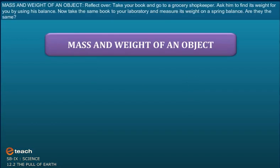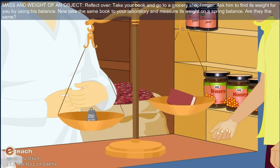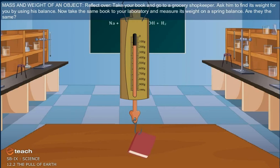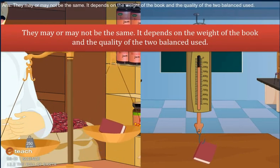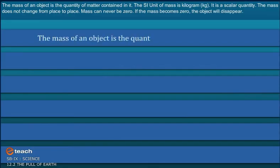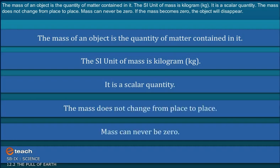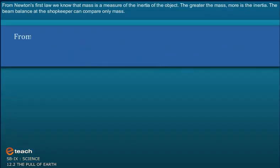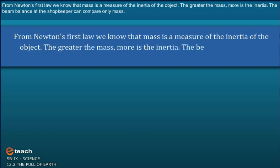Mass and Weight of an Object. Activity: Take your book and go to a grocery shopkeeper. Ask him to find its weight using his balance. Now take the same book to your laboratory and measure its weight on a spring balance. The mass of an object is the quantity of matter contained in it. The SI unit of mass is kilogram (kg). It is a scalar quantity. Mass does not change from place to place and can never be zero. From Newton's first law, mass is a measure of the inertia of the object — the greater the mass, the more the inertia. A beam balance at the shopkeeper can compare only mass.